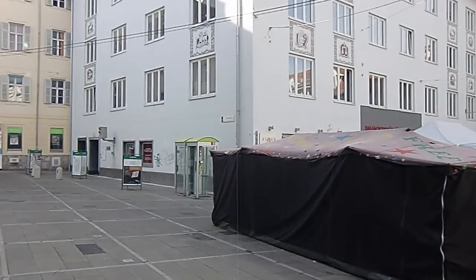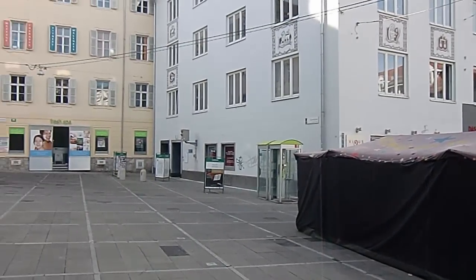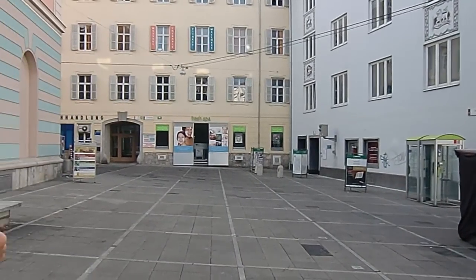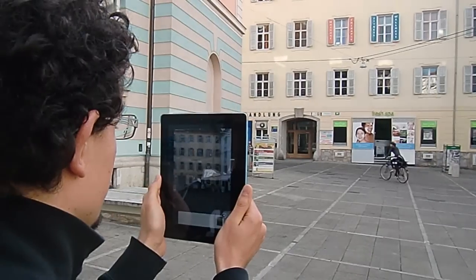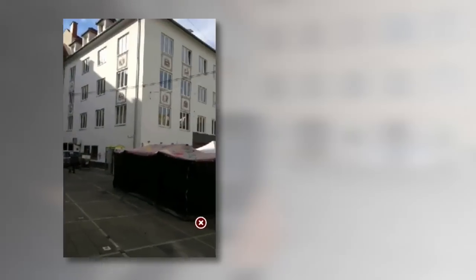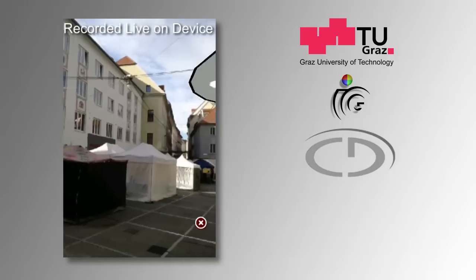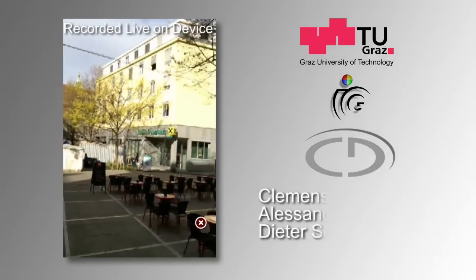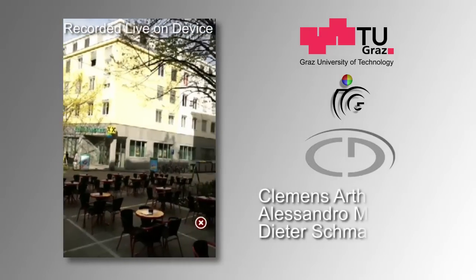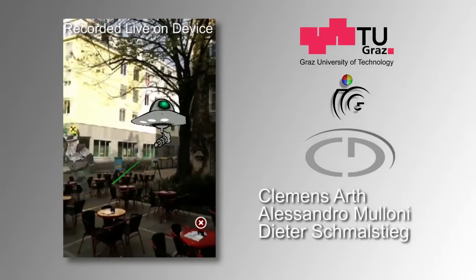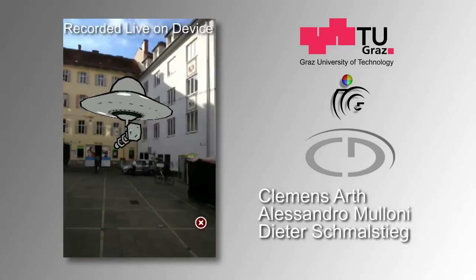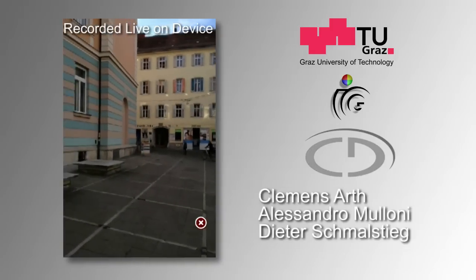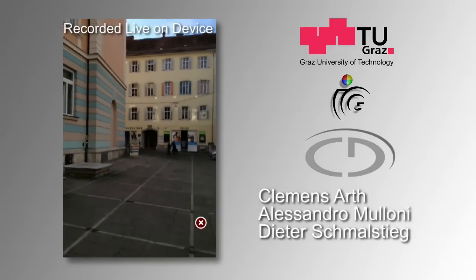We implemented our approach on Apple iOS, testing it using an iPad 2 and an iPhone 4S. The video was directly recorded on the iPhone 4S running an augmented reality application. Due to the highly accurate pose estimate, the unidentified flying object and the dwarf are both accurately occluded by the building facades.